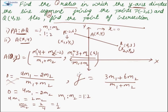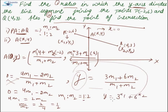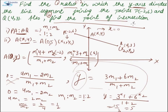To find y, substitute M1=1 and M2=2 into the y equation: y = (3×1 + 6×2)/(1+2) = (3+12)/3 = 15/3 = 5. So the coordinates of point A are (0, 5). Thus the ratio is 1:2 and the coordinates of the point of intersection are (0, 5).